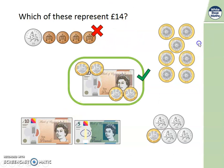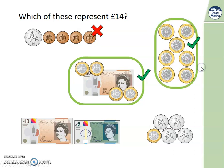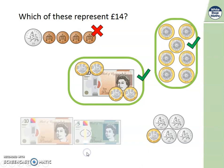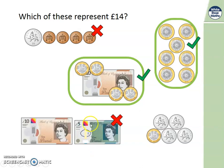Up here, we can see these are each 2 pounds: 2, 4, 6, 8, 10, 12, 14 pounds — correct. Down here: 10, add 5 pounds — no, that's going to make 15 pounds. And here we've got 1 pound and then 4 ten-pences: 10, 20, 30, 40 — no, that's 1 pound 40.